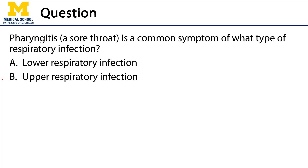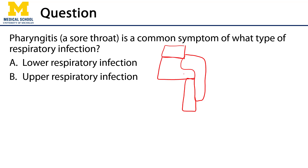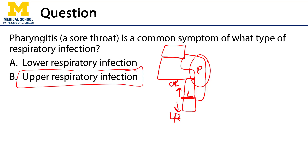Recall the relationship between the pharynx and the larynx, the nasal cavity, and the oral cavity. The pharynx is more proximal than the larynx. Within the larynx, we have the vocal folds. Everything proximal to the vocal folds is the upper respiratory system; everything distal is the lower respiratory system. Therefore, a pharyngeal infection is going to be an upper respiratory infection — a URI. Thank you very much for your time.